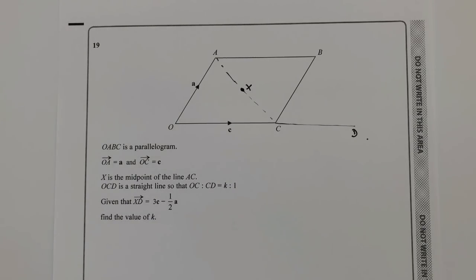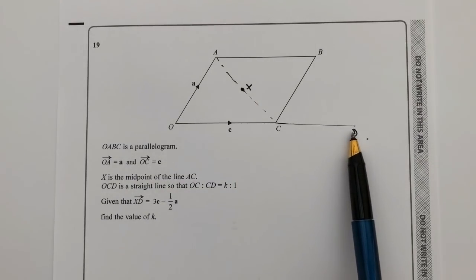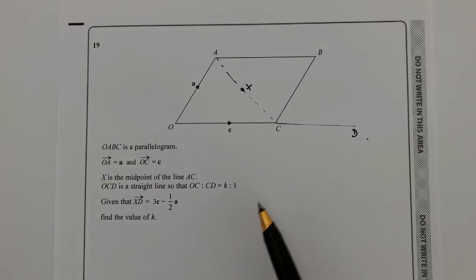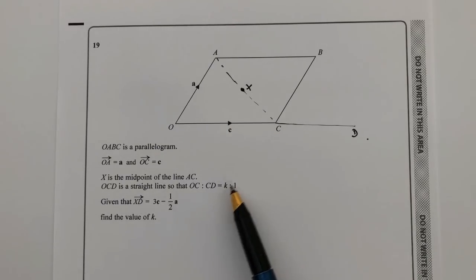What they're asking us to do is find the value of K. The information we're given is that the vector XD is 3C minus a half A. It looks quite complicated, but we'll work through it. To find K, it helps to find the vector CD first.